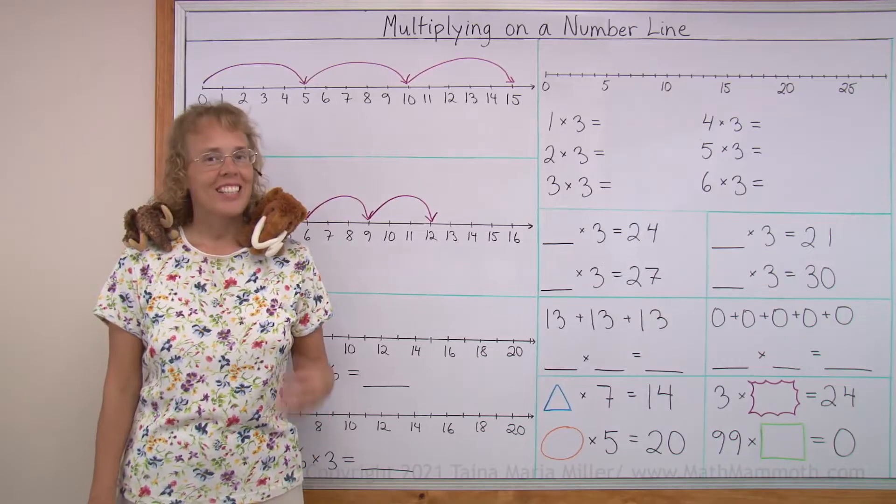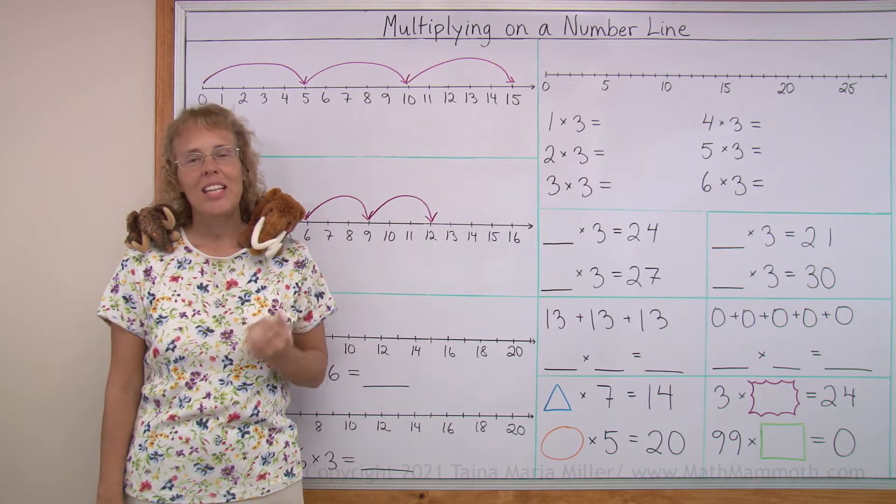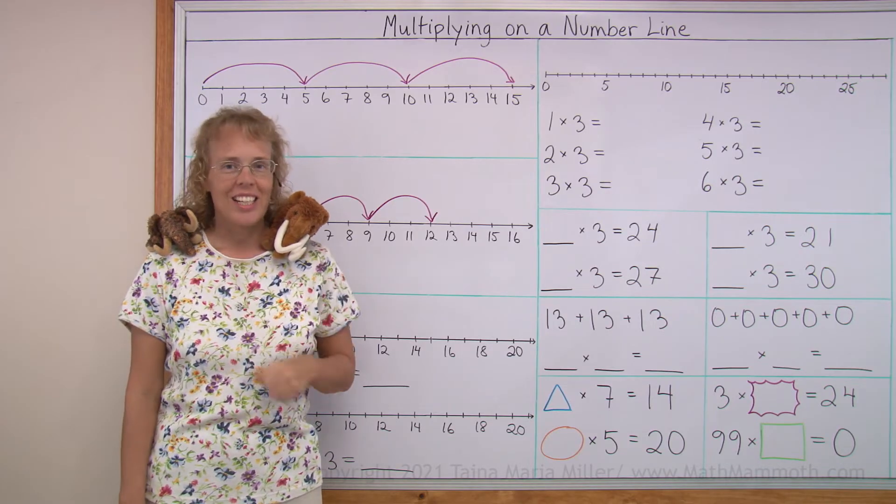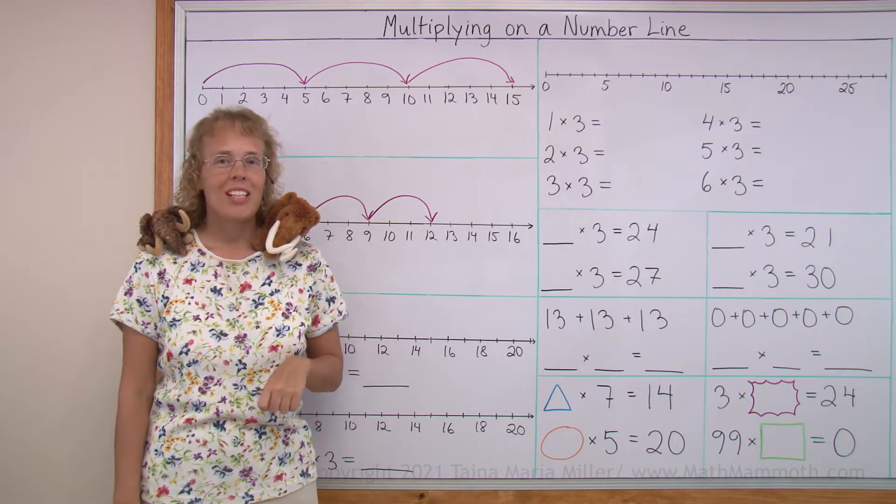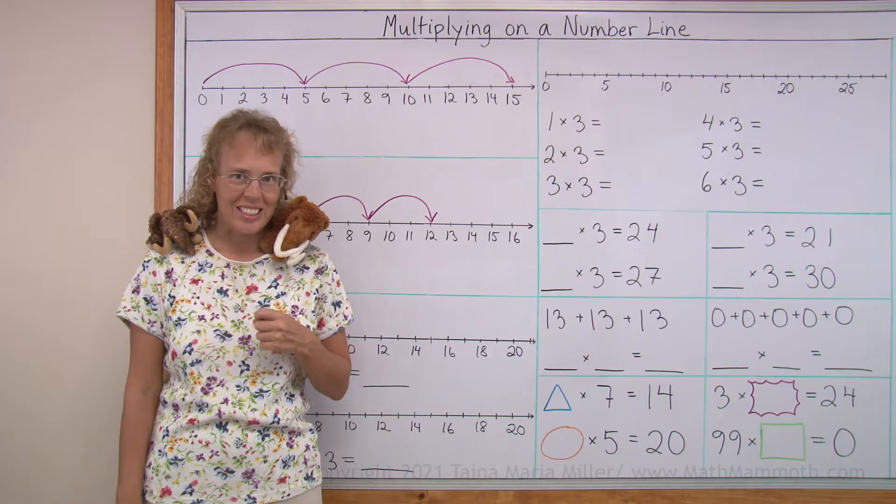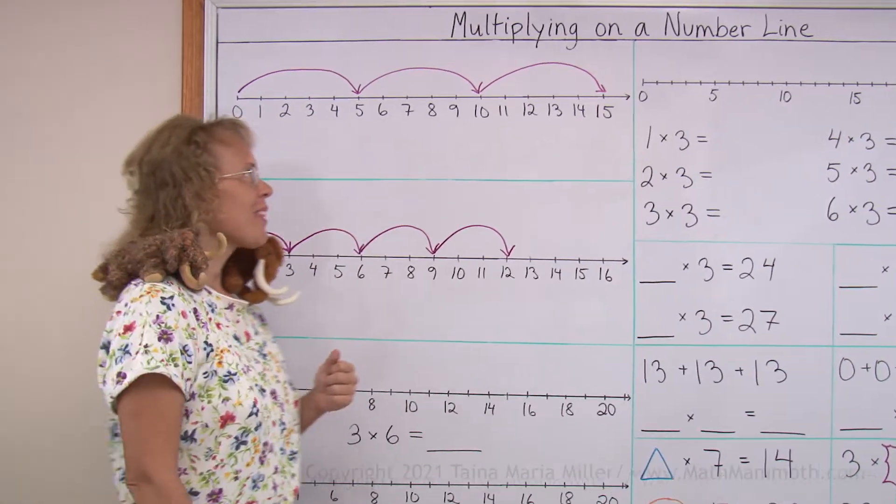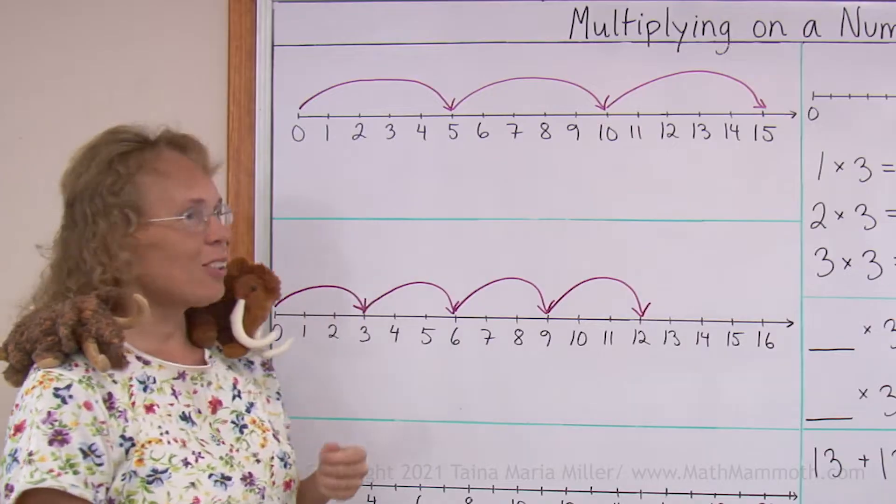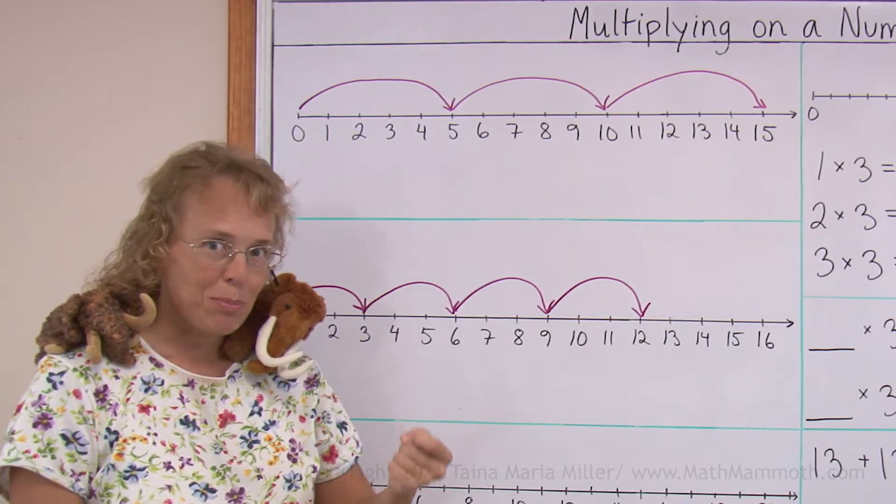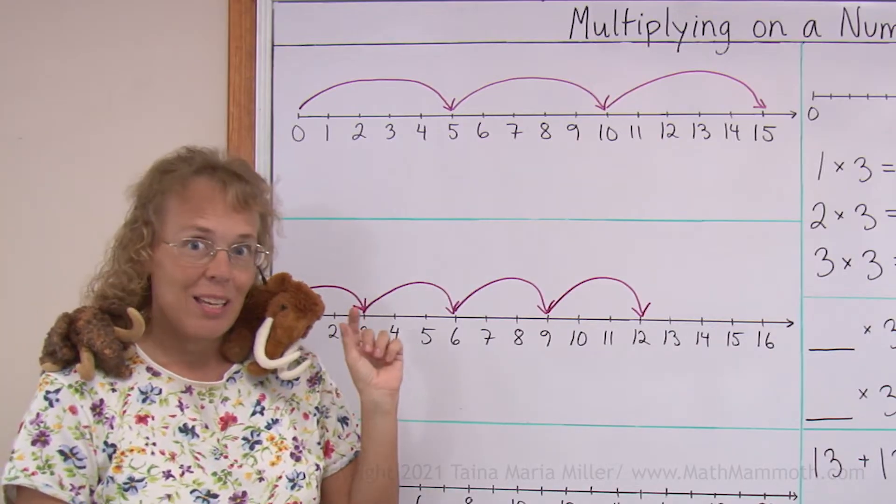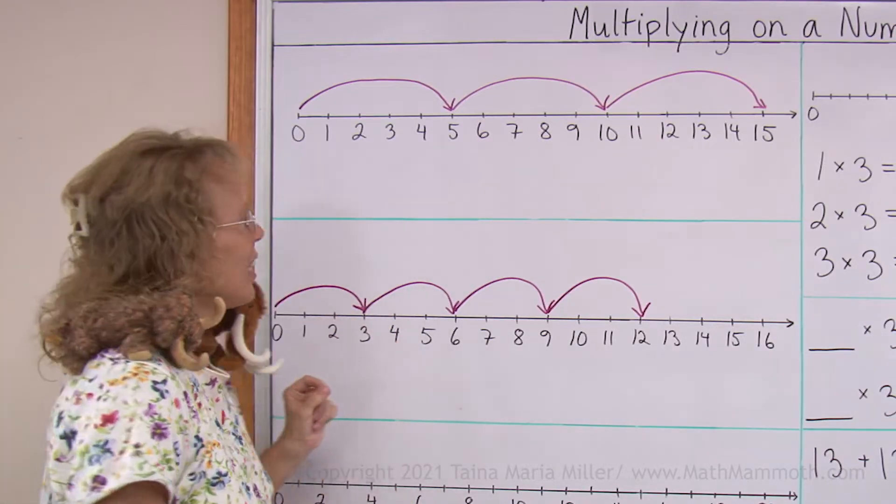Hello, my name is Maria and this is Mathie, my mascot. And this is Giganto, Mathie's cousin. Both of these guys really like jumping on the number line so that's why they came along for this lesson. We're going to study multiplying on the number line. Now over here you see those arrows and they signify jumps on the number line. Each jump, this time being the same amount of steps.